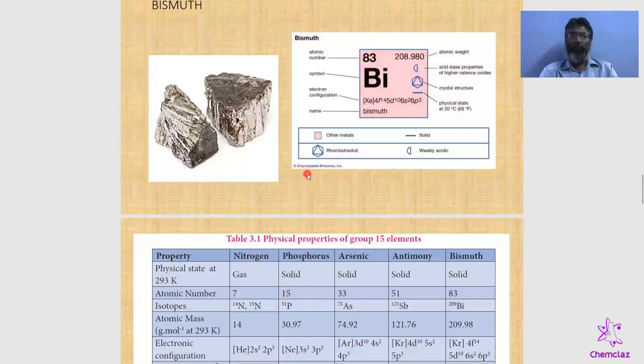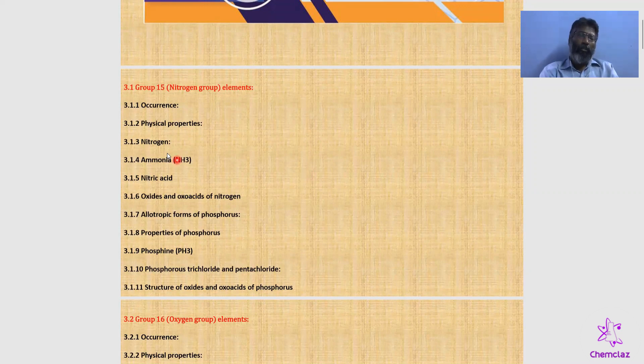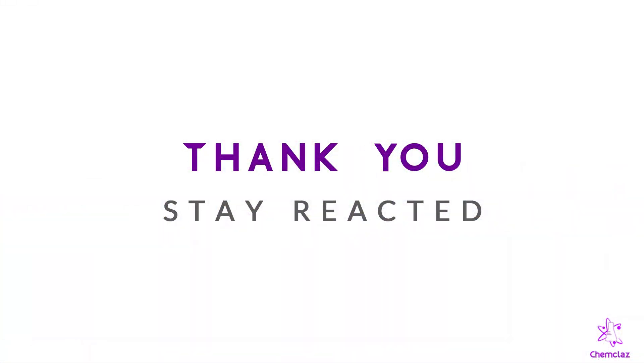Today we have completed the topic of nitrogen. Chapter 3 is a very big chapter covering Groups 15, 16, 17, and 18. We have completed up to section 3.13 — occurrence, physical properties, and nitrogen. Thank you, students. I hope you understand the concepts. Keep moving, stay reactive.